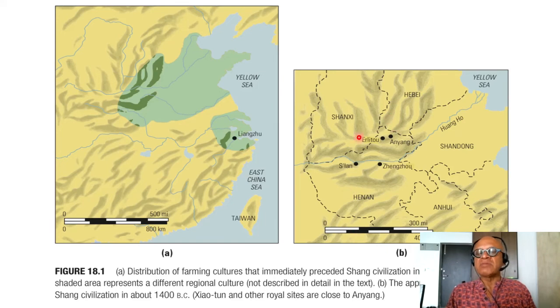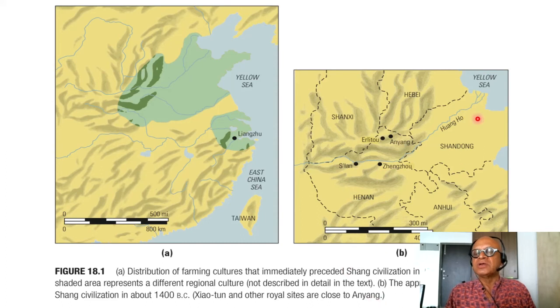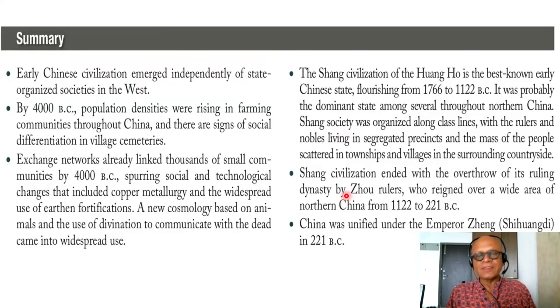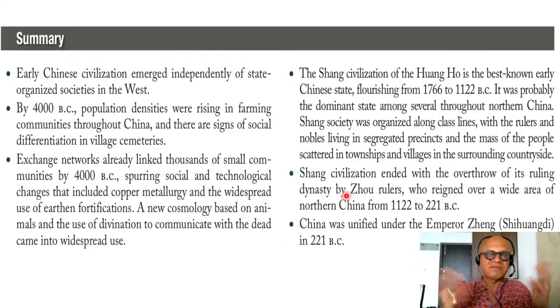You can see Hebei, Shangxi, Anyang is here — that's what is mentioned. Hwangho River, Shandong, Anhui, Henan, and so on. Shiitun and other royal sites are close to Anyang. Just to summarize again, very brief introduction.